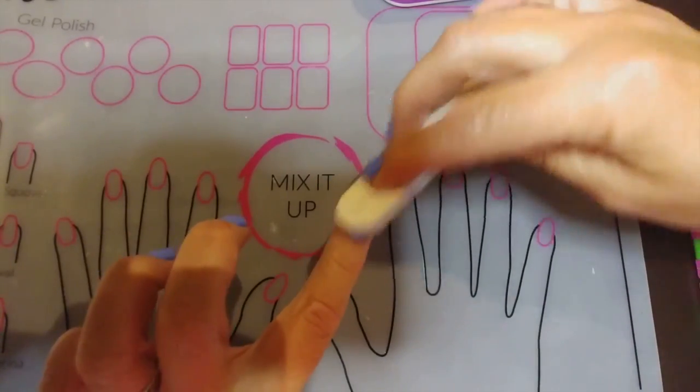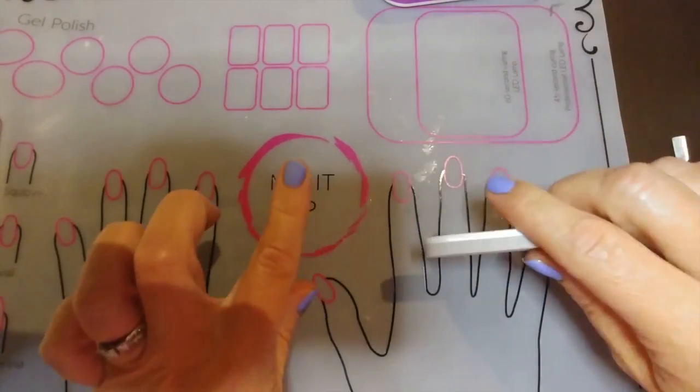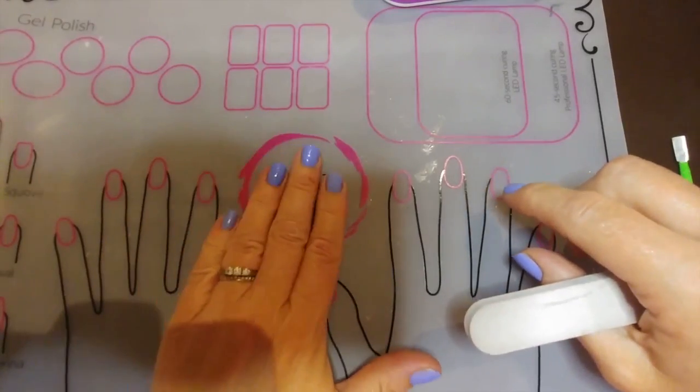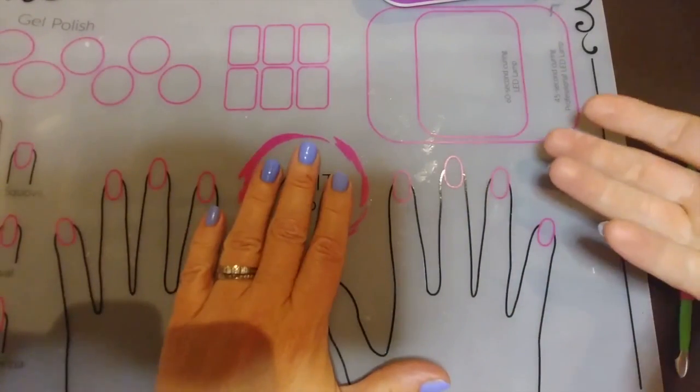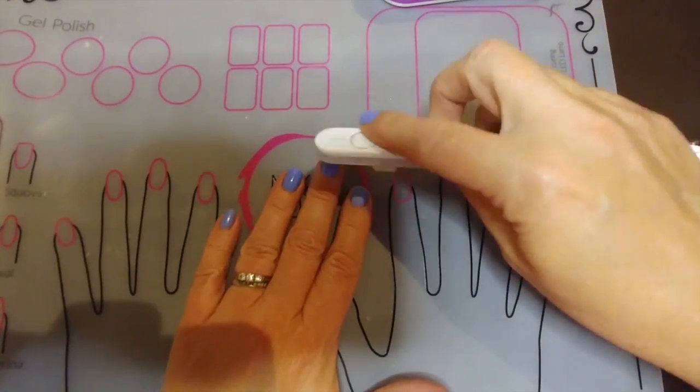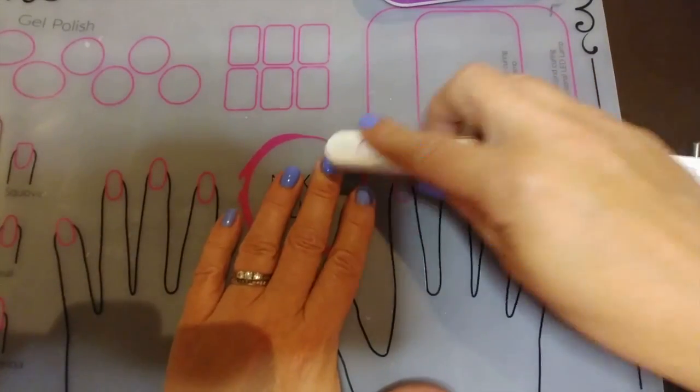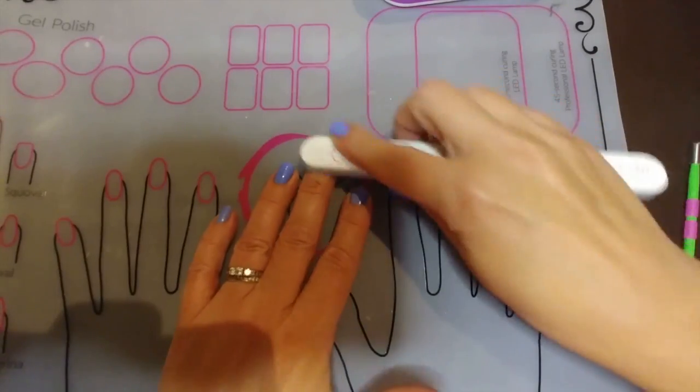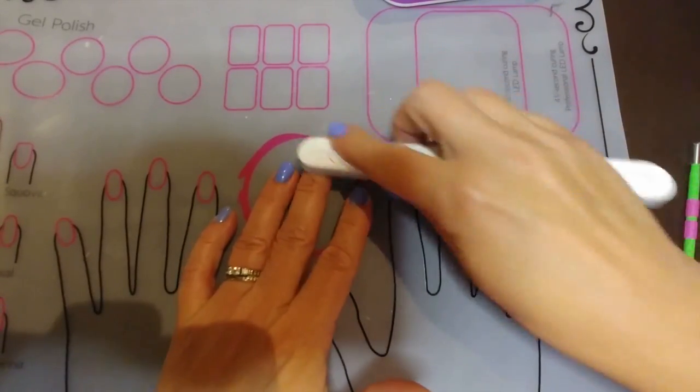And there you have a matte finger compared to a glossy finger. It's just that easy, super fast, super easy. Anybody can do it as long as you have a buffer and nail file, but use the buffer side.